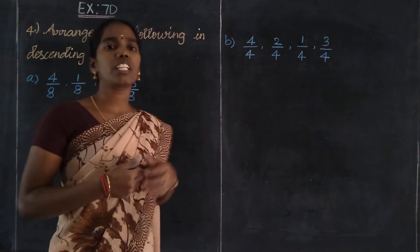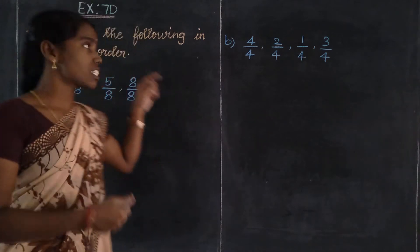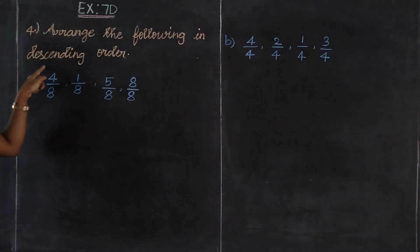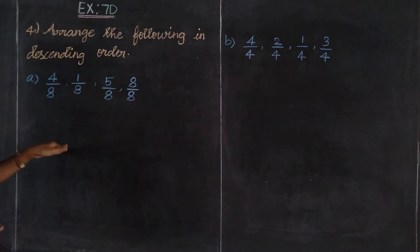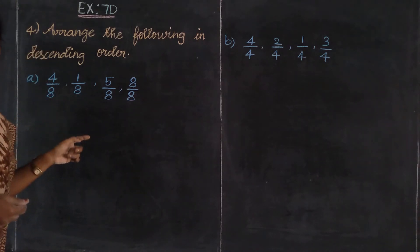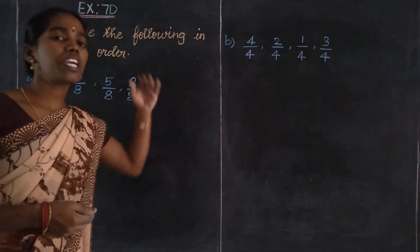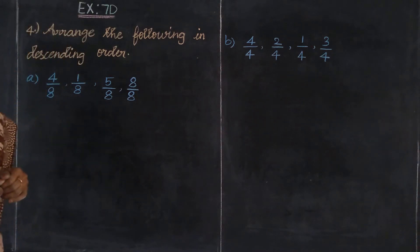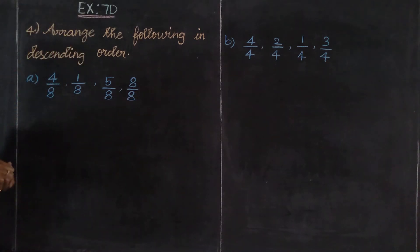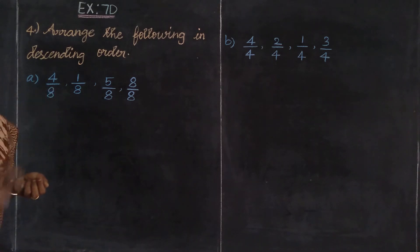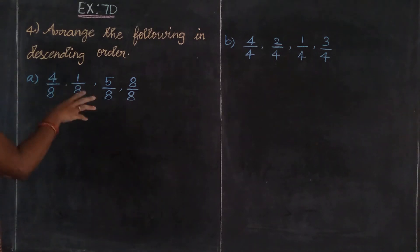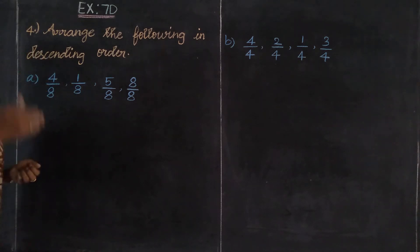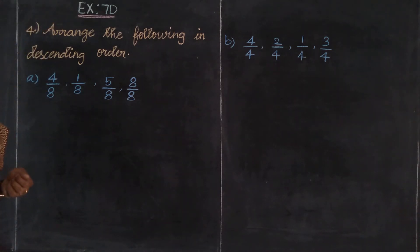In the previous videos we learnt about the same exercise, 3rd Roman — finding ascending order. This is the 4th Roman: descending order. In descending order, the meaning is biggest value to smallest value. In previous videos, ascending order was smallest value to biggest value. In this video, the 4th Roman is descending order — biggest value to smallest value.